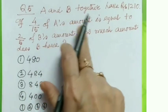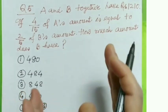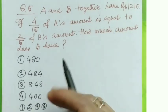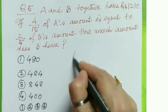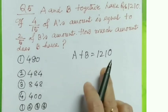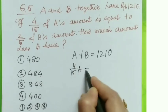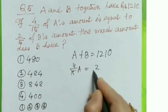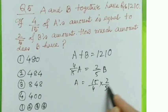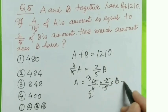Question 5: A and B together have rupees 1210. If 4/15 of A's amount equals 2/5 of B's amount, how much does B have? We know a plus b equals 1210. From the condition: (4/15)a = (2/5)b, so a = (15/4) × (2/5) × b.